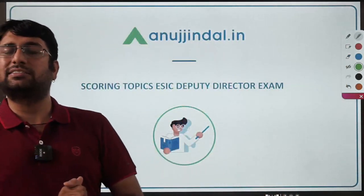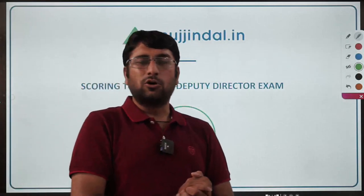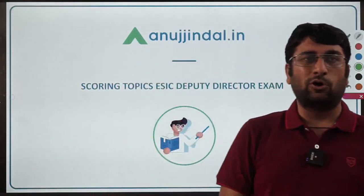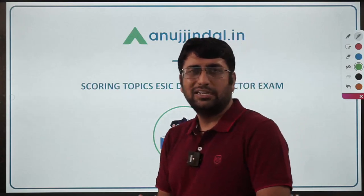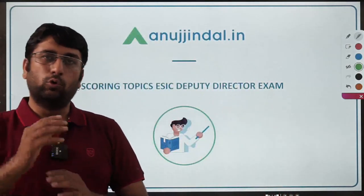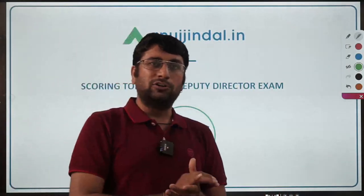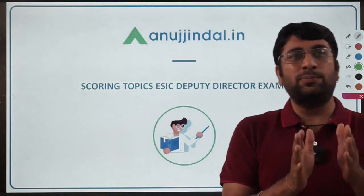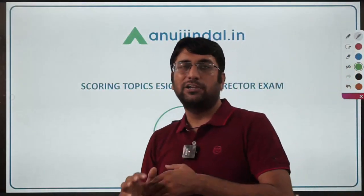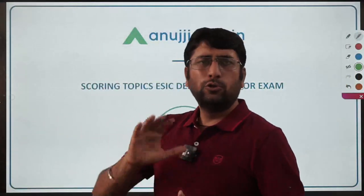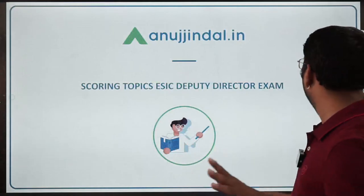Section A, as you already know, is English comprehension where you have 15 questions coming from antonyms, synonyms, grammar, and some other aspects including reading comprehension. Specifically from Section B, I'll discuss what all topics you can focus upon so that you can score better marks. This is not a very lengthy video but it is going to be helpful.